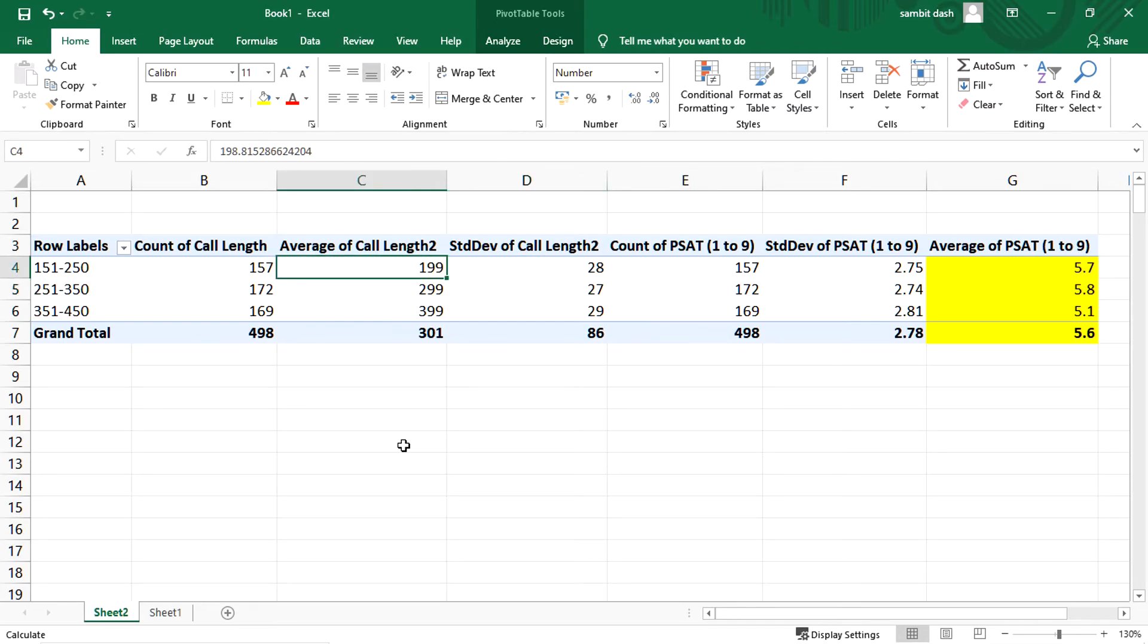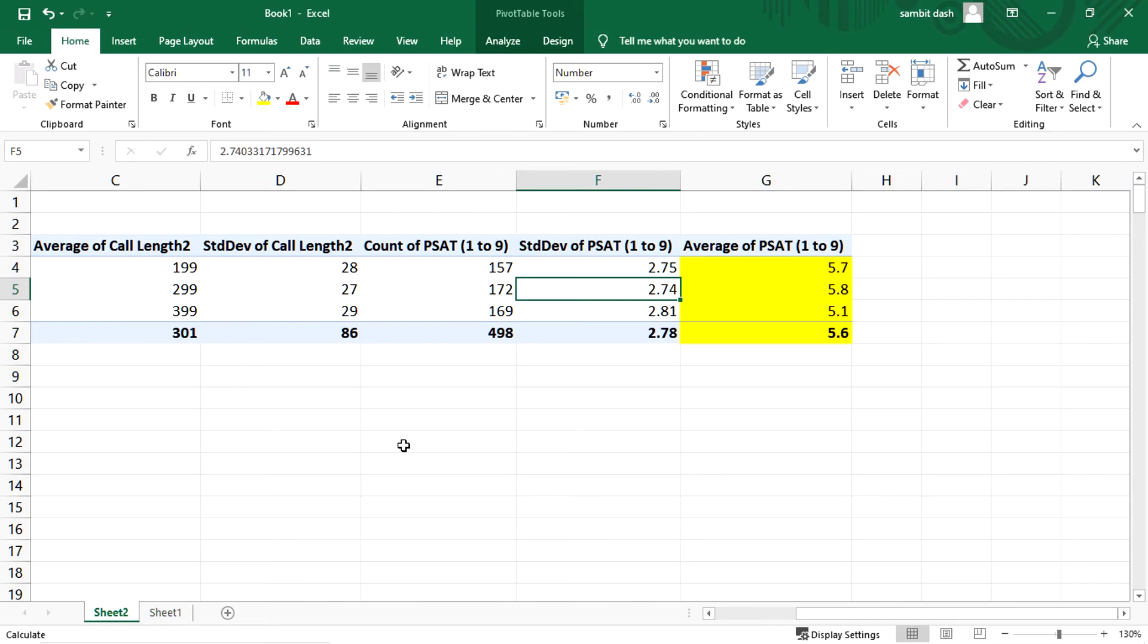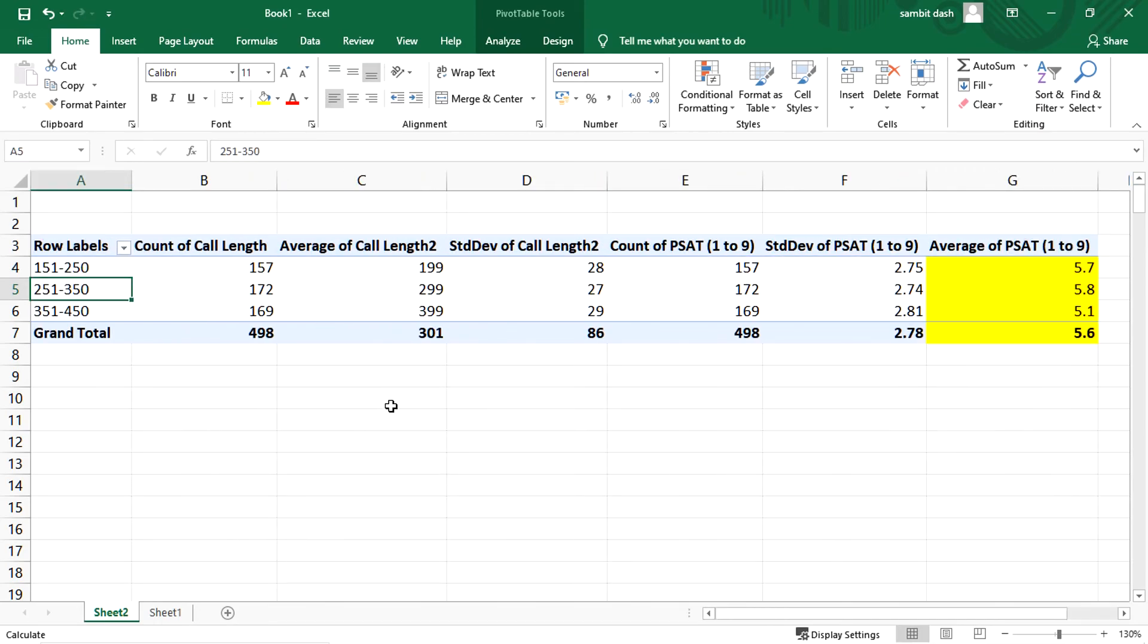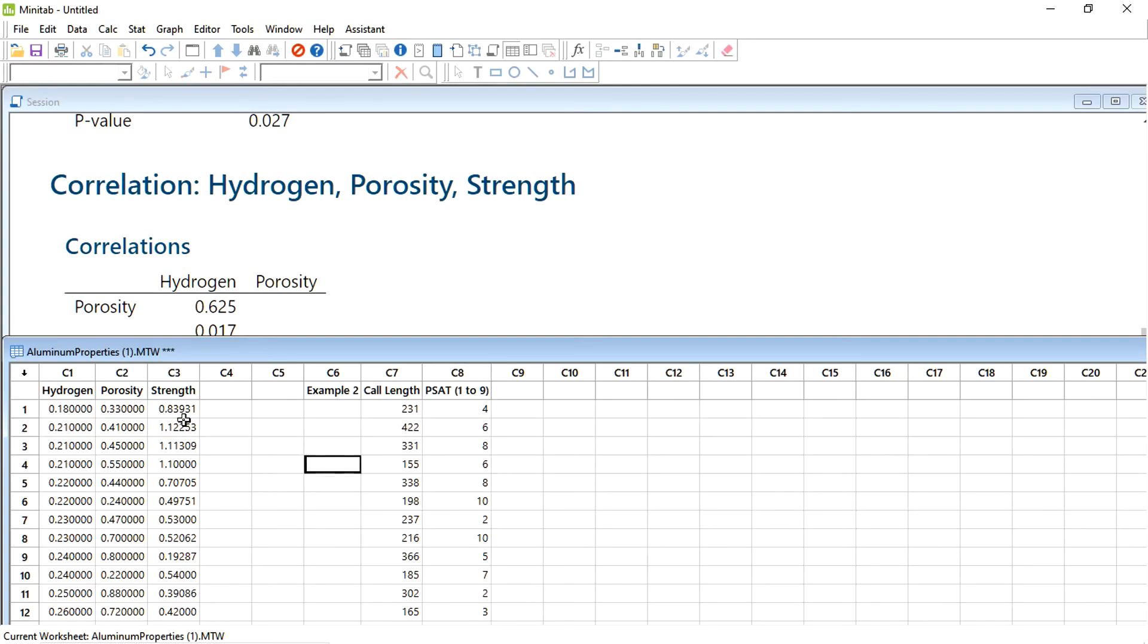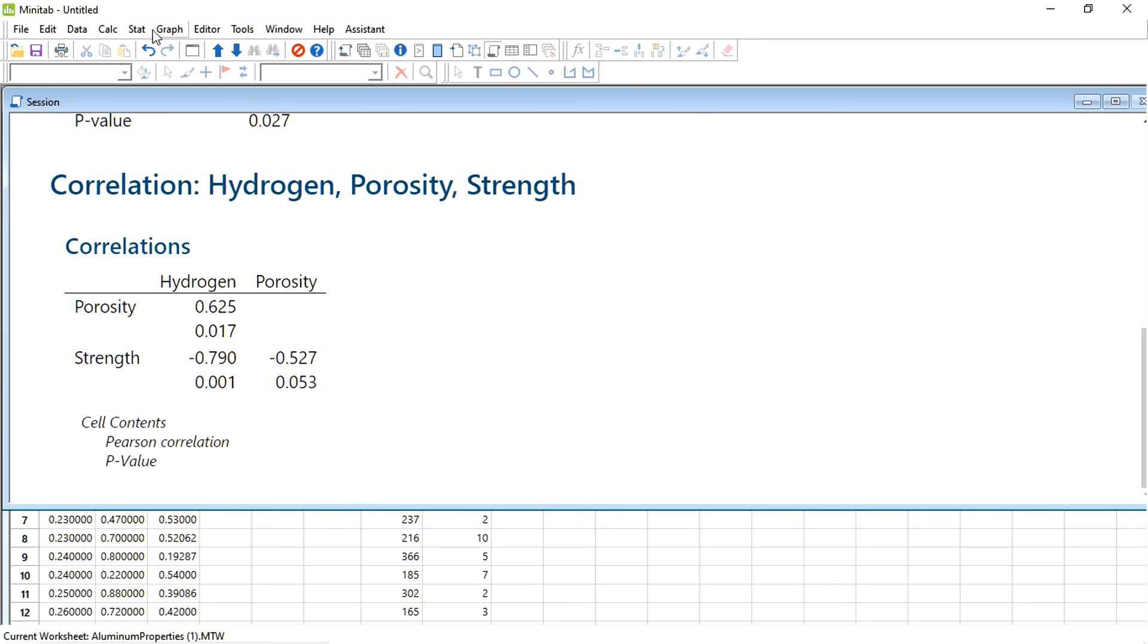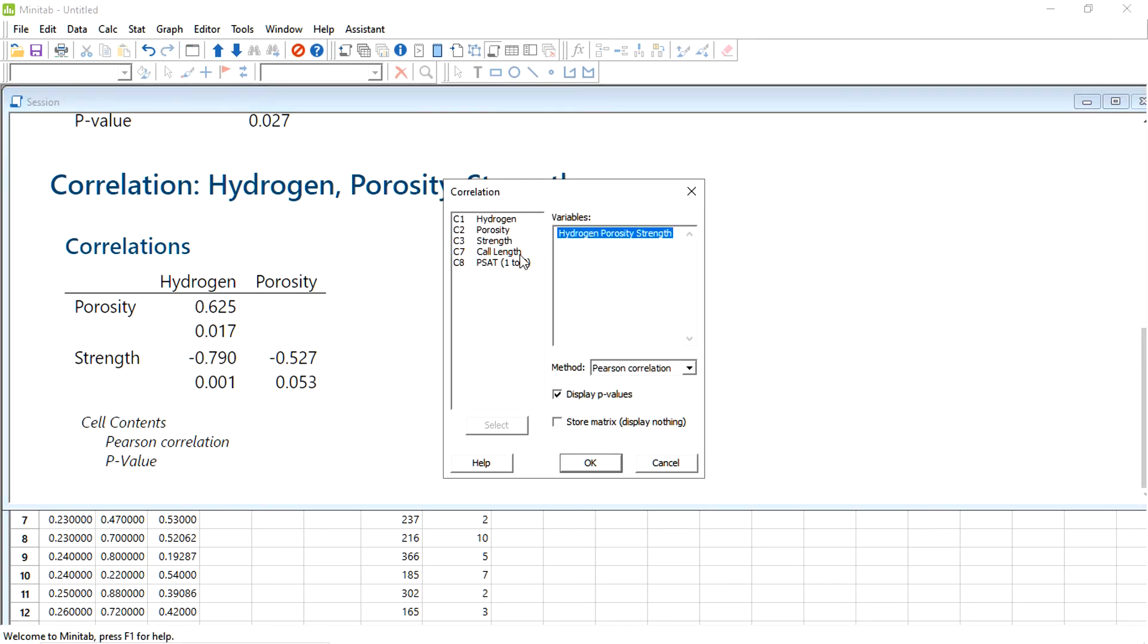We can say that broadly these call length seconds are consistent. But when we go to PSAT data, the standard deviation of PSAT is about 2.75, 2.74, 2.81, again fairly consistent on this. But when we see the averages of PSAT, for example 351, this is going down actually. The PSAT has reduced, so the number of seconds the agents have taken has increased, the PSAT scores on average. The other two remain fairly same, but still you cannot make out anything out of this data and this sort of analysis. So let's try to analyze it in Minitab and see if we are getting any results out of it or not.